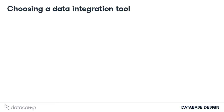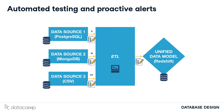When choosing your tool, you must ensure that it's flexible enough to connect all your data sources, reliable so that it can be maintained in a year, and it should scale well, anticipating an increase in data volume and sources. You should have automated testing and proactive alerts — if any data gets corrupted on its way to the unified data model, the system lets you know.